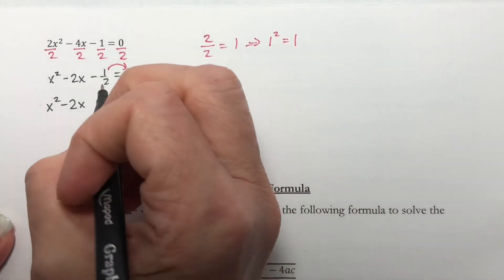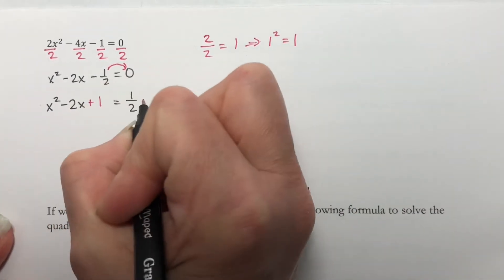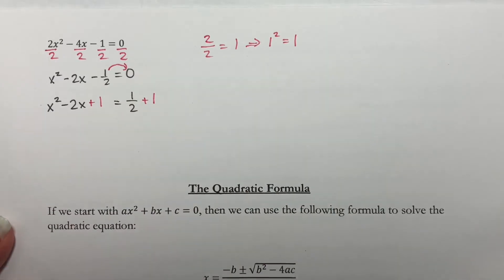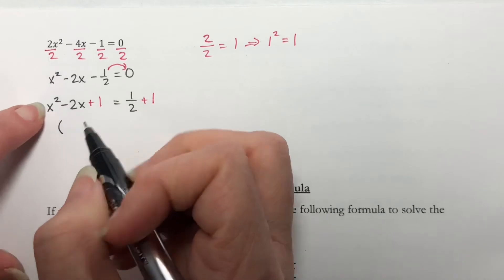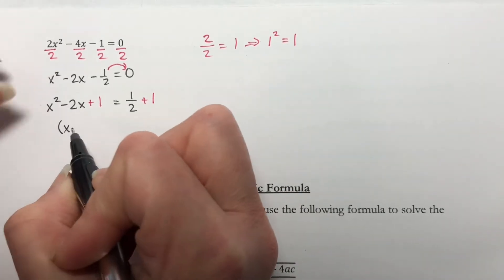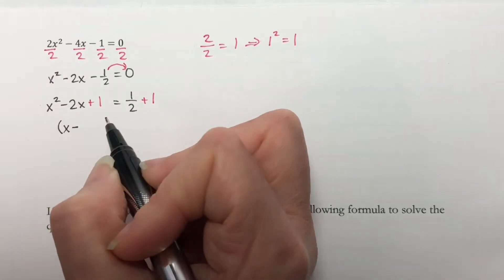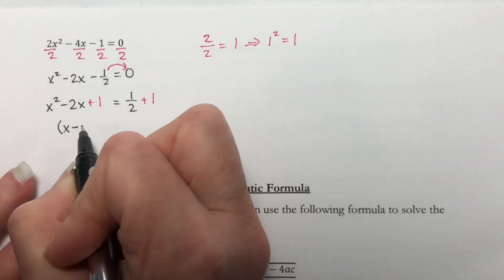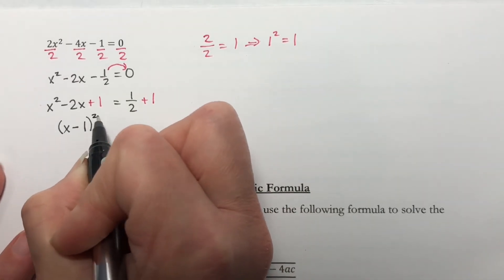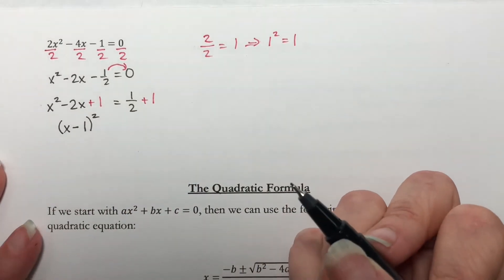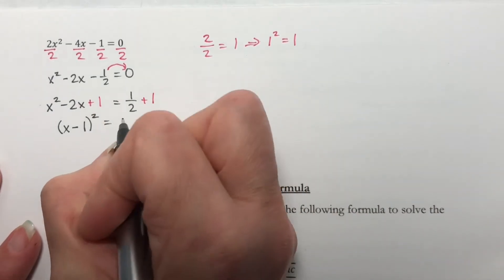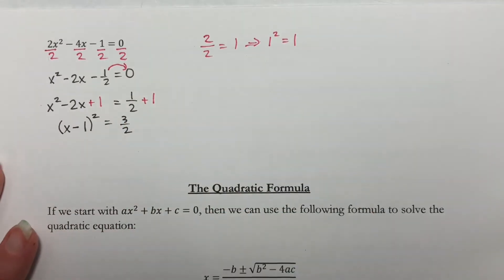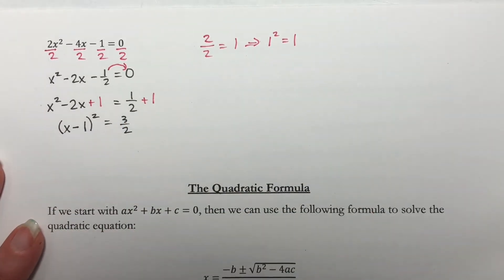So my magic number is 1. I'm going to add that to both sides. Right here, this factors as: the square root of x squared is x, that's a minus, so this is a minus, the square root of 1 is 1, and that's squared. Is equal to — if you get a common denominator, that's going to be 3 halves. So we are ready for the square root property.